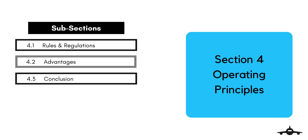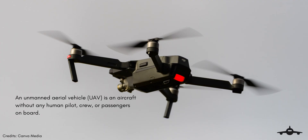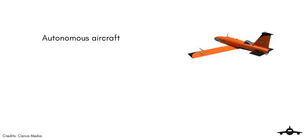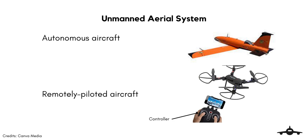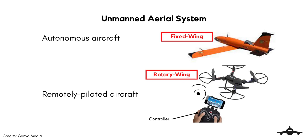As stated earlier, an unmanned aerial vehicle is an aircraft without any human pilot, crew, or passengers on board. It uses aerodynamic forces to provide vehicle lift and can fly autonomously or be piloted remotely. UAVs are components of the unmanned aerial system, which includes a ground-based controller and a system of communications with the UAV. UAVs can be seen as rotary wing or fixed wing depending upon the task to be carried out.